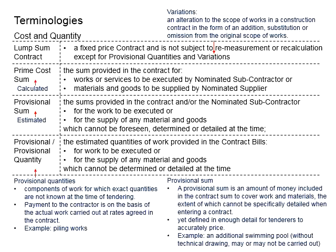The employer will still be paying the lump sum as per what was agreed by the time the contract was formed. This sum is not subjected to change once it is agreed between the contractor and the employer, except with the provisional quantities and the variations.